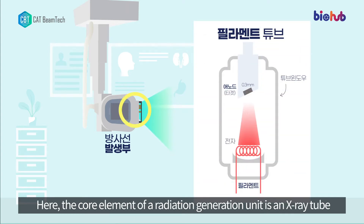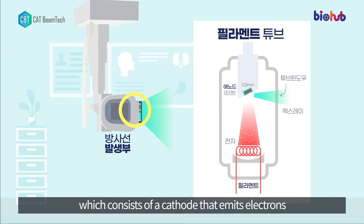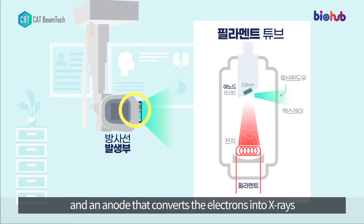The core element of a radiation generation unit is an X-ray tube, which consists of a cathode that emits electrons and an anode that converts the electrons into X-rays.